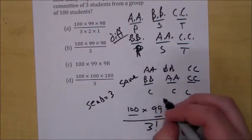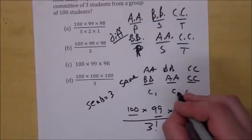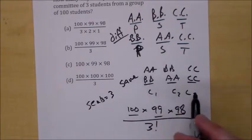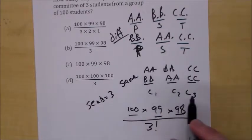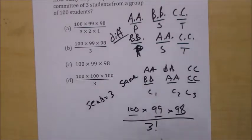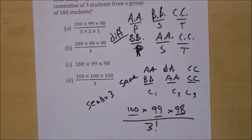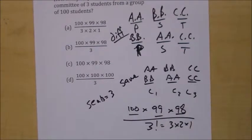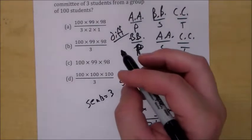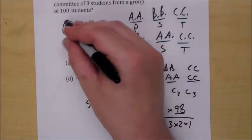If we call them committee one, two, three — you could have 1,2,3 or 1,3,2 or 2,1,3 or 2,3,1 or 3,1,2 or 3,2,1. There are six choices — that's three factorial, because there are three seats. So you divide by 3 factorial, which equals 3 × 2 × 1. Throw the factorial next to it, and that's the rule to remember. The answer is A.